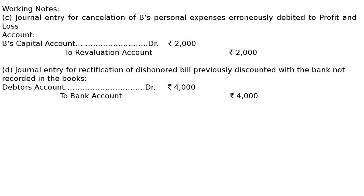The next adjustment (D part) is a bill of exchange of Rs.4000 which was previously discounted with the banker and was dishonored as on 31st March 2017, but no entry was passed for that. Journal entry for rectification: as taught in 11th class in the chapter Bill of Exchange, when a discounted bill is dishonored, the entry is debtor's account debited to bank account — not bills receivable. The amount is Rs.4000.